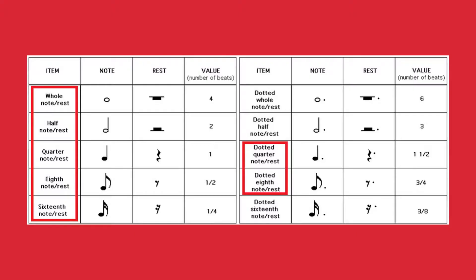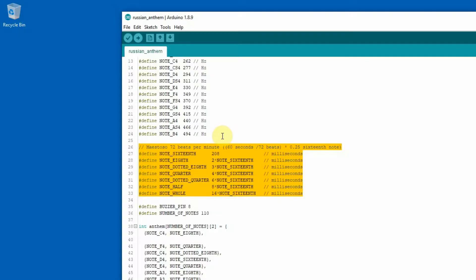All the lengths I need for the anthem are highlighted. I calculated the length value for the 16th note, and other lengths are derived from this value by multiplying.